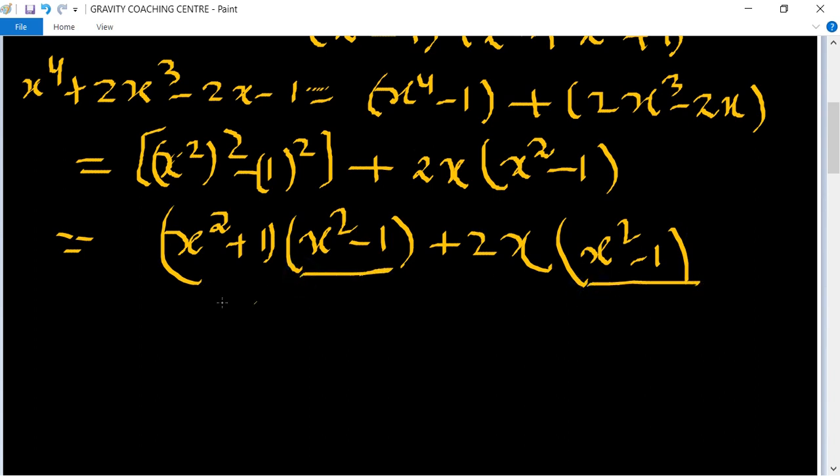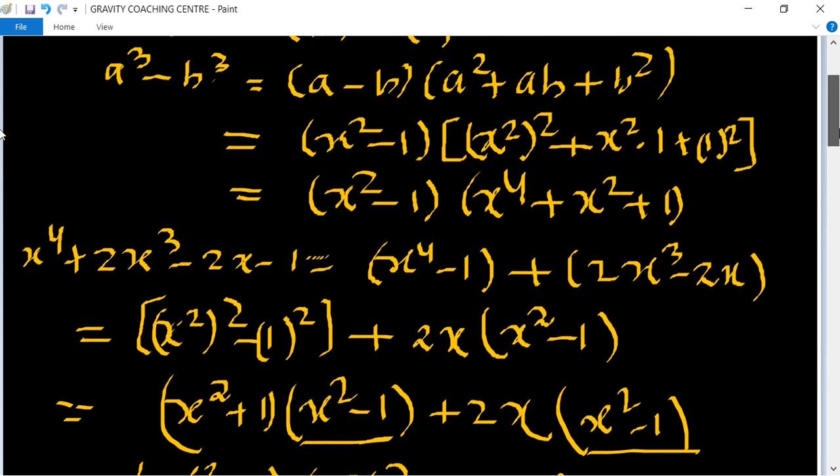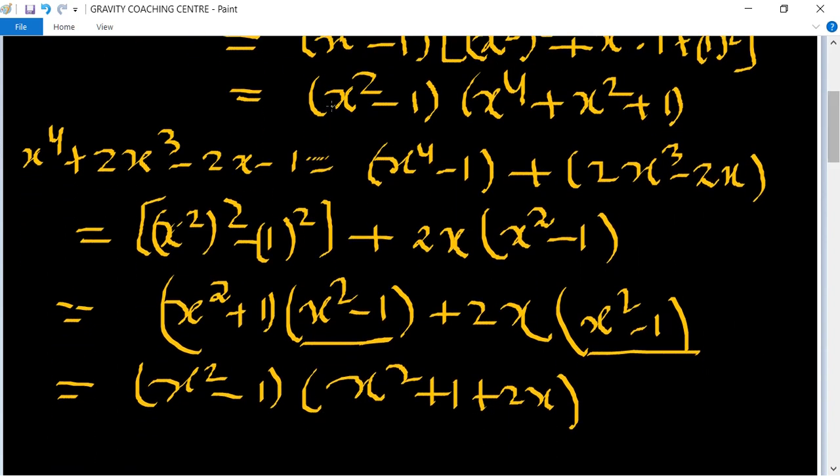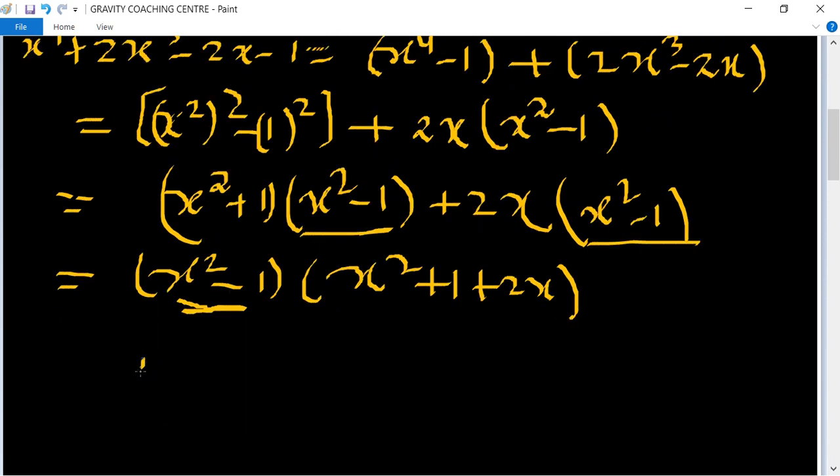So x square minus 1 is the common part. X square minus 1 times x square plus 1 plus 2x is left. Therefore the common part is x square minus 1. So therefore HCF equal to x square minus 1, which is the required answer.